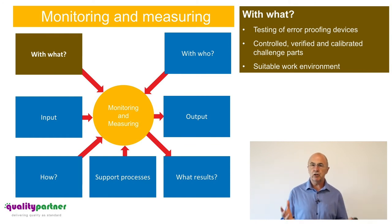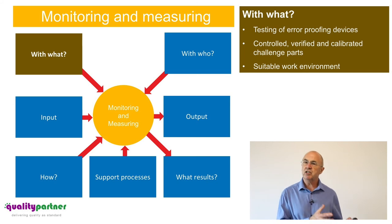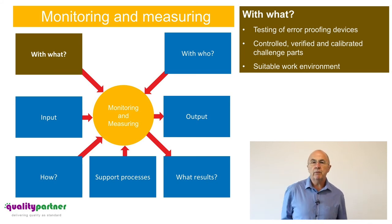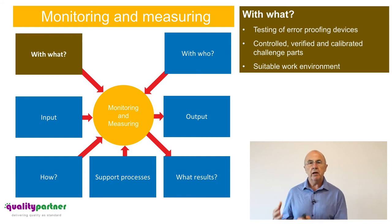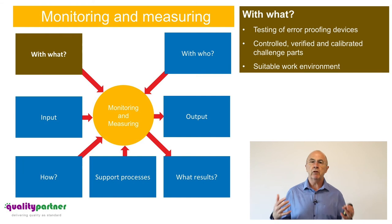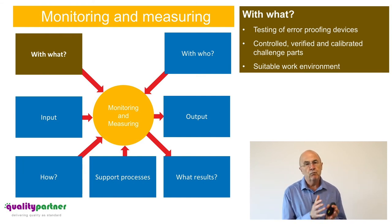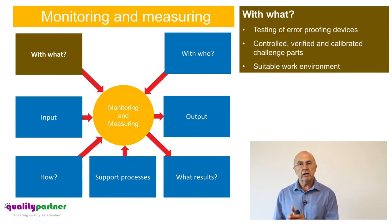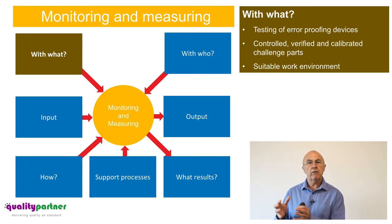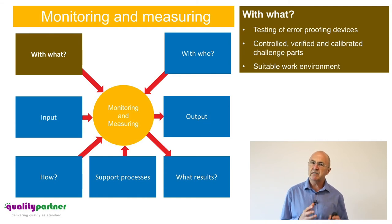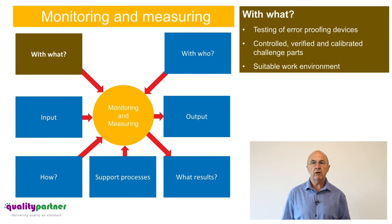Part of monitoring and measuring is also ensuring we have a suitable work environment. For example, if we're doing visual inspection, we need the right lighting, the right temperature, and the right humidity relevant to monitoring and measuring the product or process. There is even more emphasis in IATF 16949 about the suitability of the work environment.